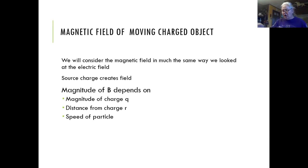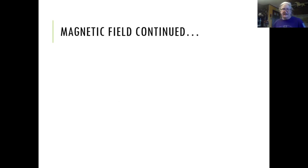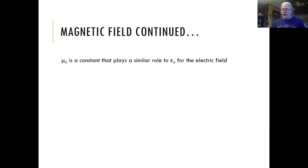For a moving charge, the strength of the field depends on the magnitude of that charge, how far you are from it, and how fast it's going. But since that distance is constantly changing, you actually have to calculate this as an integral. What's easier is to look at the magnetic field of a current-carrying wire.